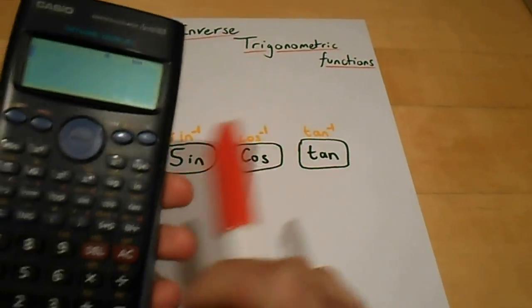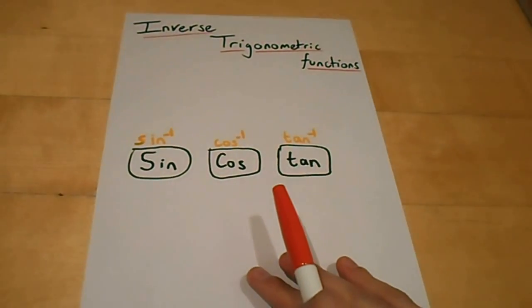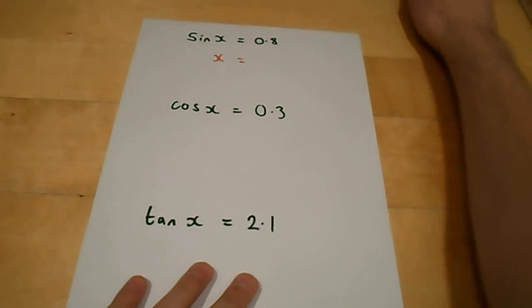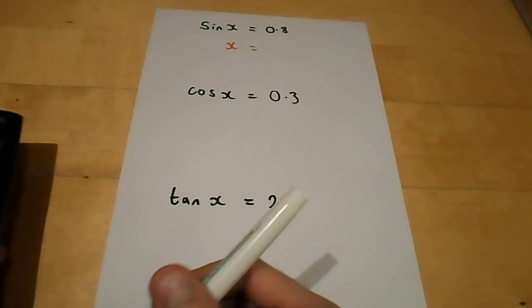And they are found on your calculator in exactly the same place, but they're going to be in yellow above them. So what that means is we need to use the shift button. Now, this video is just going to be about using your calculator. It's going to get you used to using it to find those buttons and what you have to type in to get them.